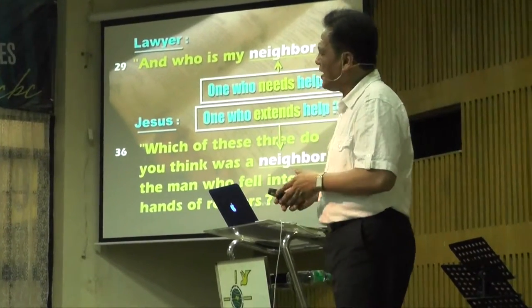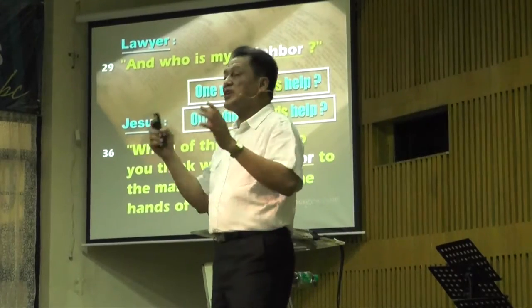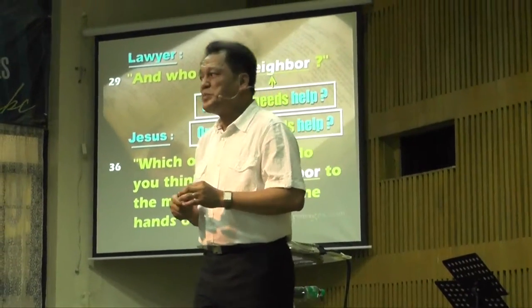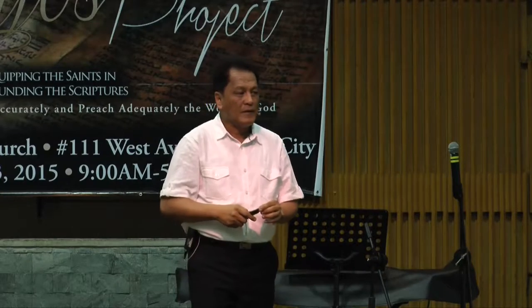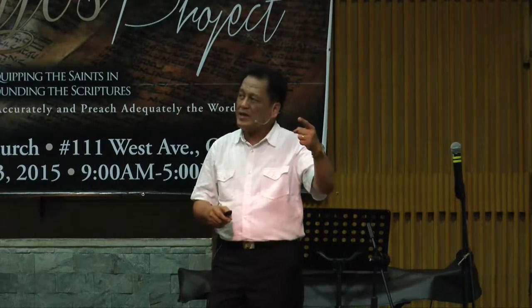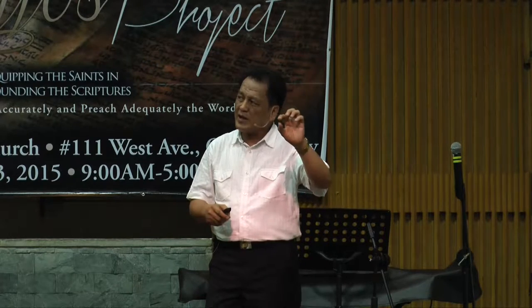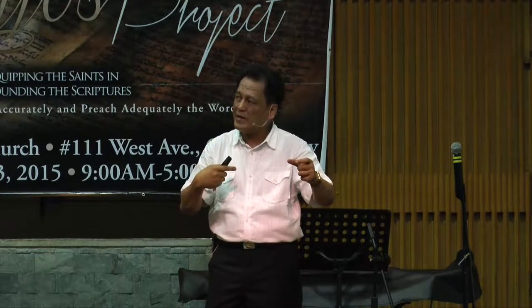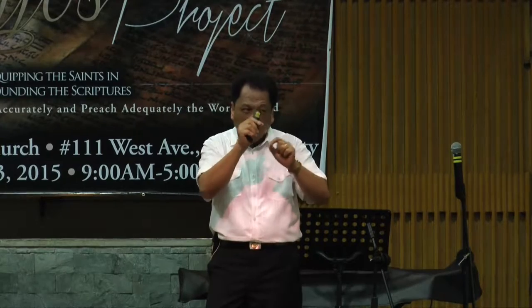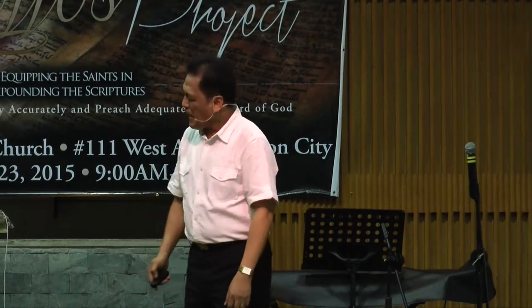There are two different neighbors here, and the Lord Jesus Christ through this parable tried to correct the question. Do not ask 'Who is your neighbor?' — the right question is 'Are you a neighbor?' We have the setting, we understood the story, and something unusual: the Samaritan becomes the hero where in the minds of the Jews they are the antagonist. That's what you find in a parable — something unusual. And then through this parable we answered the question.